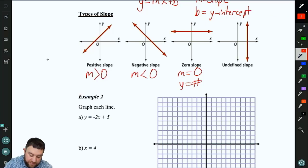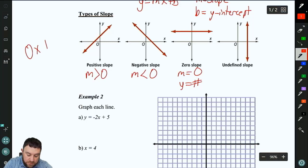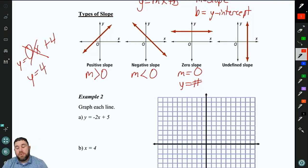Because if your slope is 0, let's say we had y equals 0x plus 4, well, that cancels out. So we just get y equals 4. So 0 slope, horizontal lines, are always y equals a number.